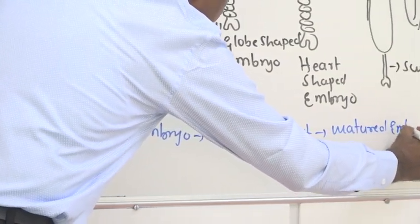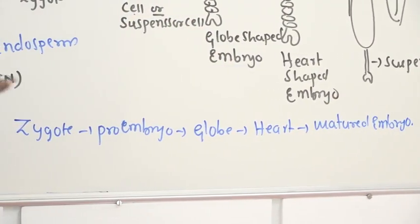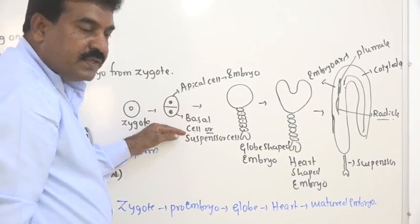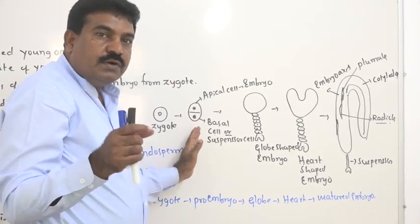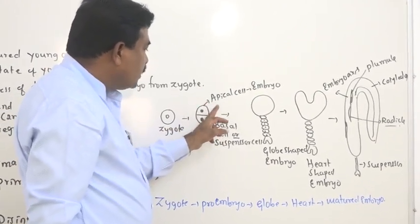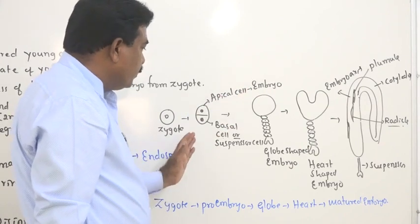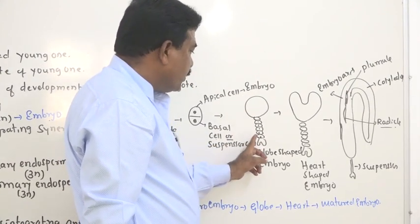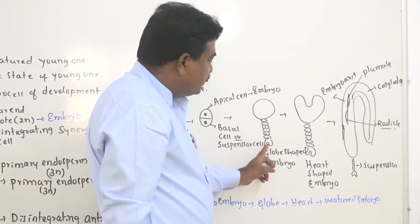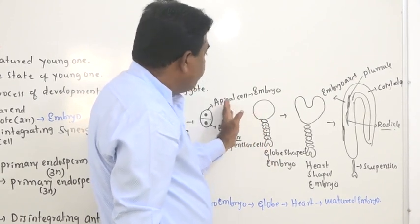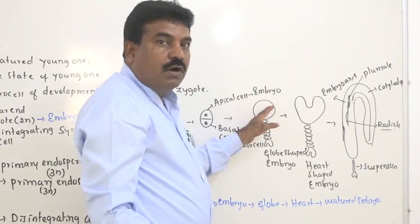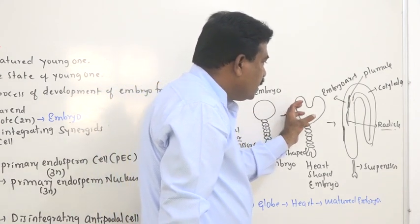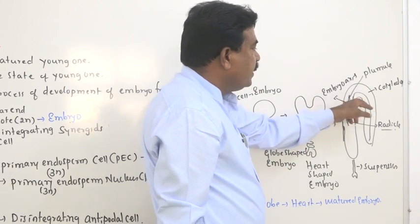From the above diagram we can analyze that the zygote undergoes mitotic division to form two cells. The basal cell — called the suspensor cell, present at the base — later forms the suspensor, through which nourishing fluid is absorbed. The apical cell, present towards the apex, develops into the embryo. The basal cell undergoes longitudinal mitotic division to form the straw-like suspensor, which absorbs nutrients from the endosperm, while the apical cell undergoes division in all directions by mass meristematic activity, becoming globe-shaped.